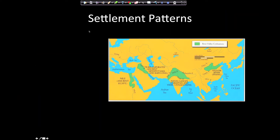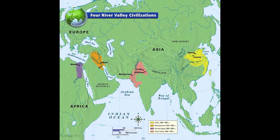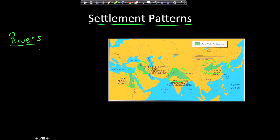Let's talk about settlement patterns — where did people settle and why? Referring to ancient civilizations, we have one near the Nile in Egypt, the Tigris and Euphrates Rivers in Iraq, the Indus River in India, and the Yellow River in China. All these ancient civilizations developed independently, and they all developed near rivers. Rivers provide a source of water for agriculture, and the Neolithic Revolution is all about farming.